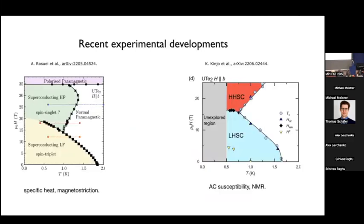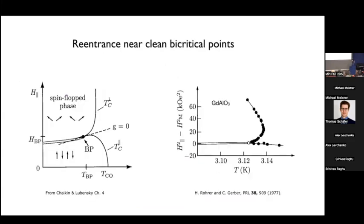Around the same time, NMR measurements, specific heat, and AC susceptibility measurements in UTe2 suggested the existence of multiple superconducting phases as a function of applied field along the b-axis. Going back to textbook examples of bicritical systems — from Chaikin and Lubensky — the spin-flop transition in an antiferromagnet in an applied field is a first-order transition with a bicritical point, and the experimental phase diagram exhibits non-monotonic behavior. This is generic bicritical physics, nothing unique to UTe2.